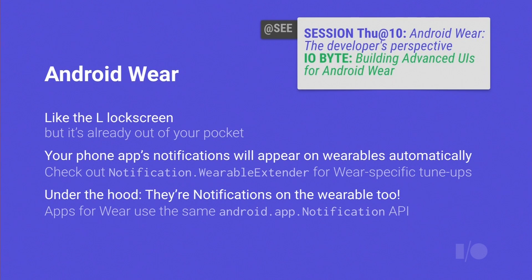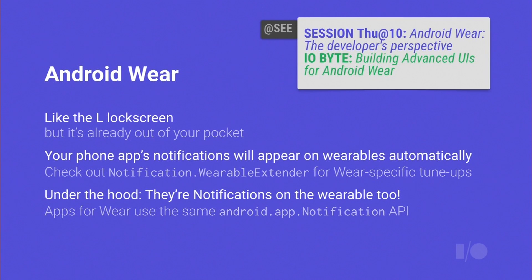Wear is key to the notification story in L. It's very much like the L lock screen — super glanceable, except with Wear it's already out of your pocket. Your phone app's notifications appear on wearables automatically — they get bridged there. Notification.WearableExtender is where all the APIs exist for customizing how notifications appear on the wearable device — split into multiple pages, group notifications together, and so on. On the wearable itself, the notification manager is what manages those cards you see in the wearable UI, so you use the same notifications API. There are I/O sessions and I/O bytes on YouTube covering Wear development in detail.